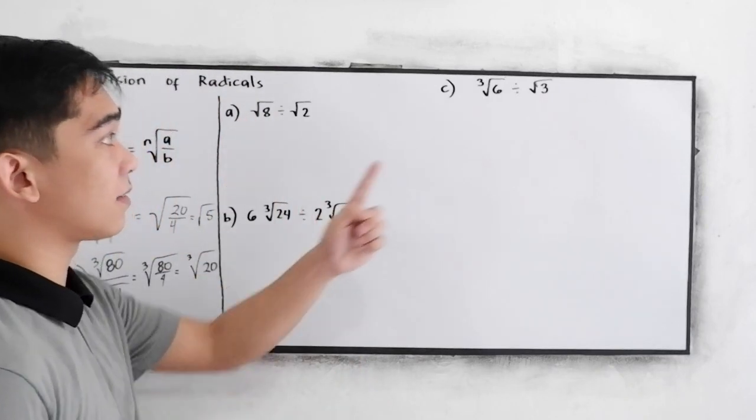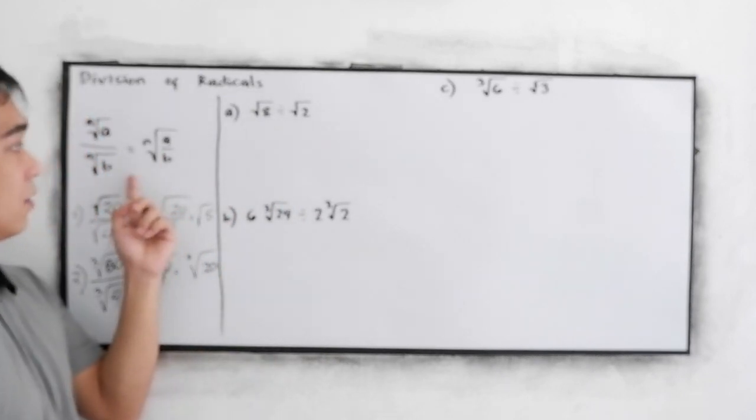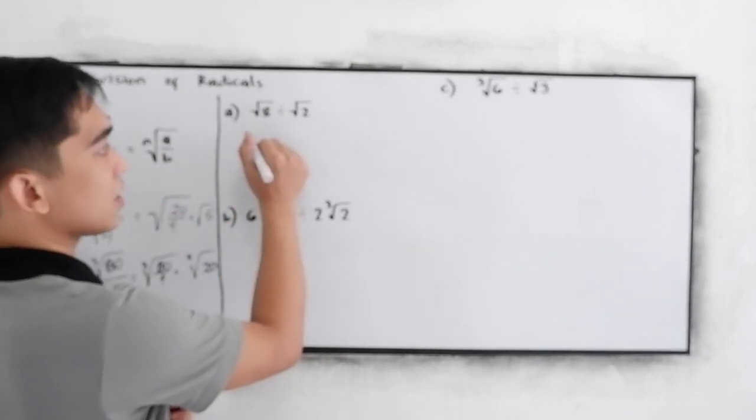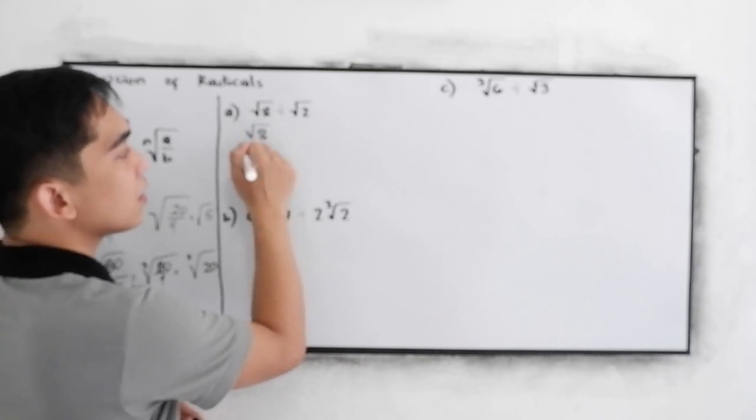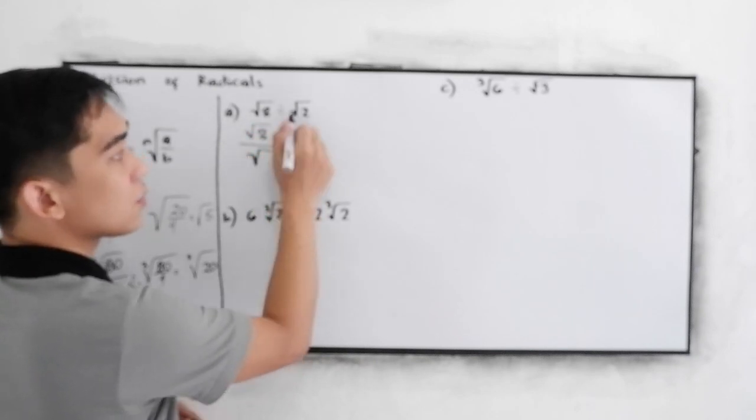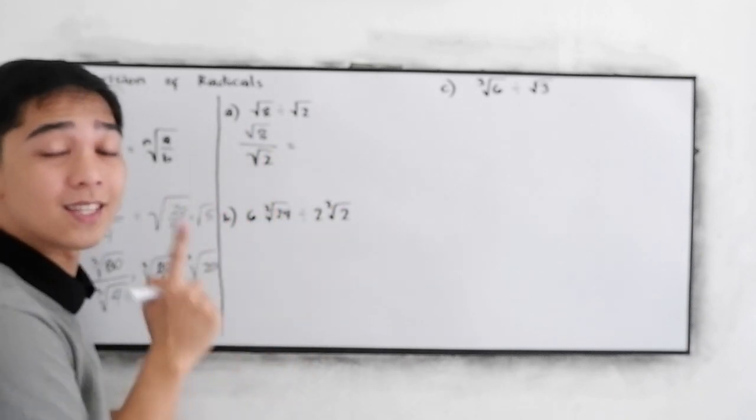Letter A. For A and B, we can use this principle. This is just the same as square root of 8 over square root of 2. First step, always check the index.